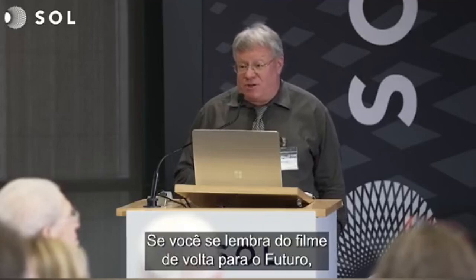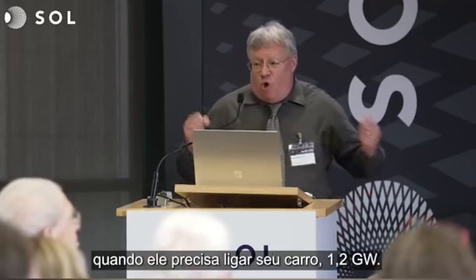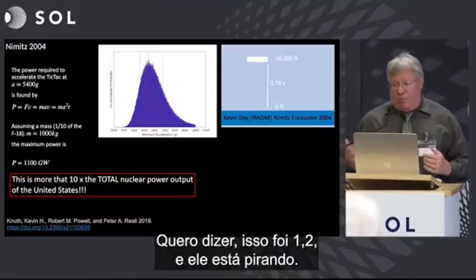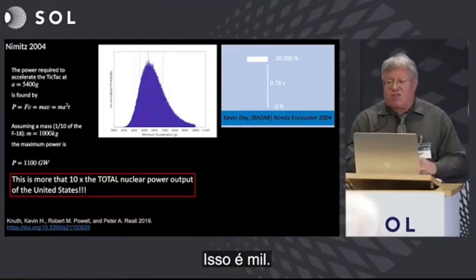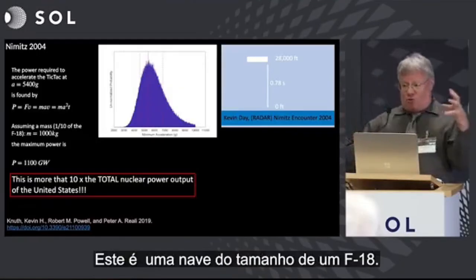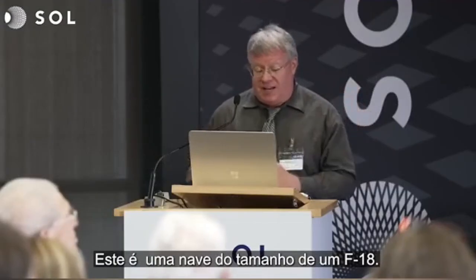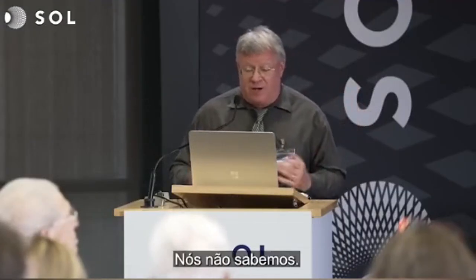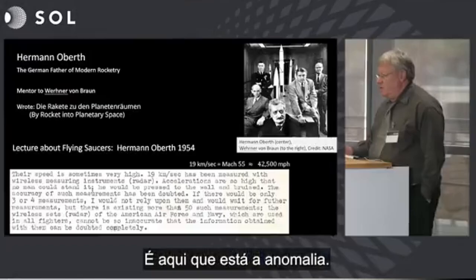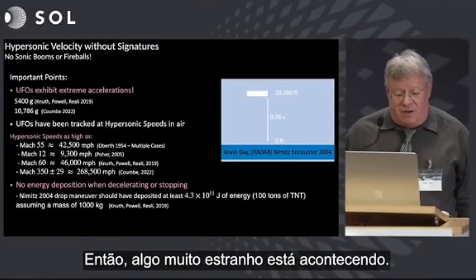1,100 gigawatts — this is more than 10 times the total nuclear power output of the United States. Let that sink in. Remember Back to the Future, when he's got to power up his car? 1.2 gigawatts — and he's all freaking out. This is 1,000 gigawatts. This is one craft, one craft the size of an F-18. How does this happen? We don't know. This is where the anomaly is — something very strange is going on.